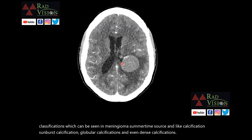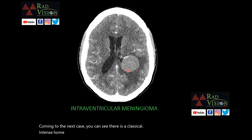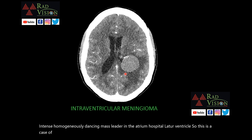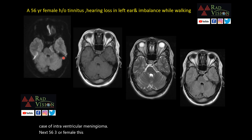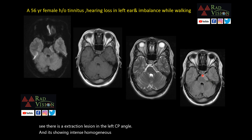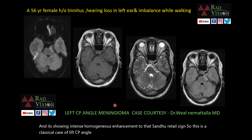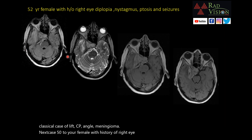Next case: there is an intensely homogeneously enhancing mass lesion in the atrium and occipital horn of the lateral ventricle — a case of intraventricular meningioma. Next, a 56-year-old female with tinnitus, hearing loss in the left ear, and imbalance: there is an extra-axial lesion in the left cerebellopontine angle showing intense homogeneous enhancement — a left CPA meningioma.